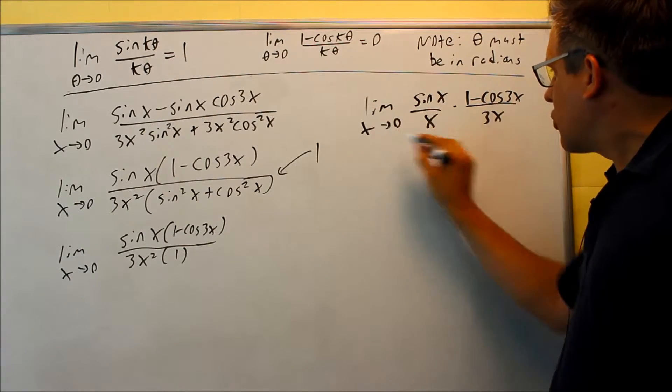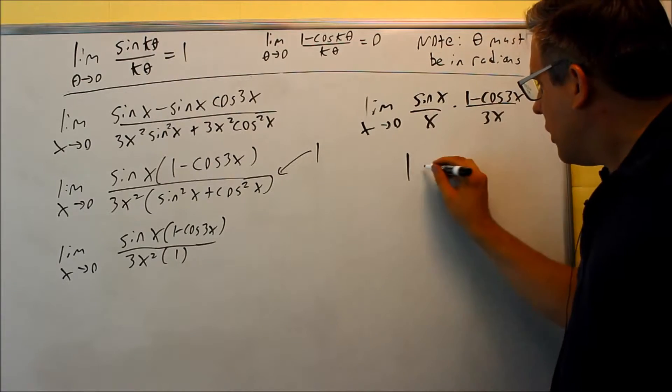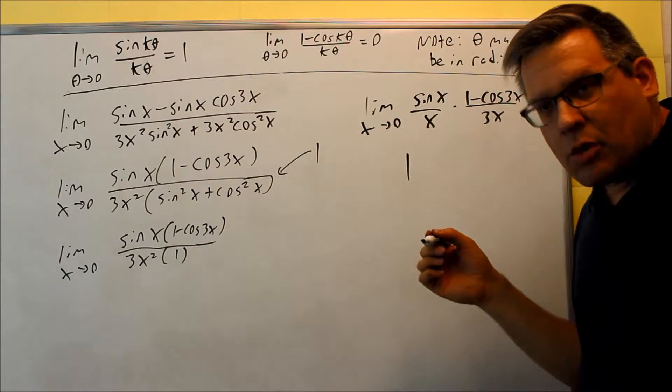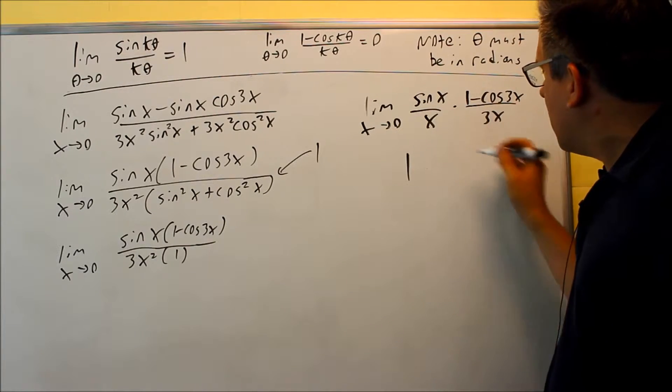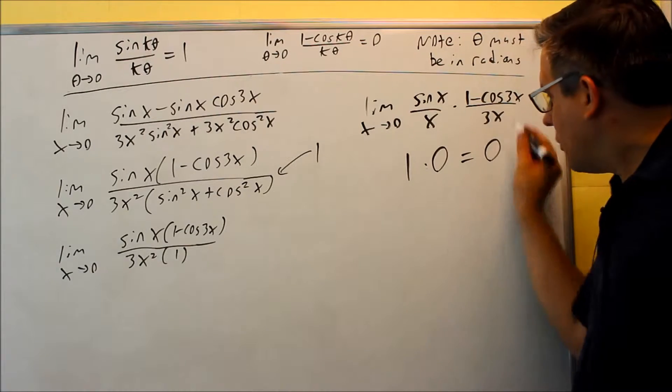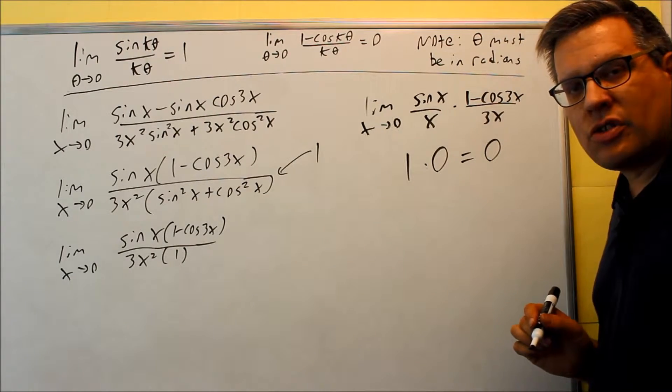What's going to happen is this first one is going to be a 1. I can also apply the limit to the second one. I can technically break this up into a limit times a limit. And when I take this one that's going to turn into a 0 which means that the whole entire problem limit is going to end up going to 0.